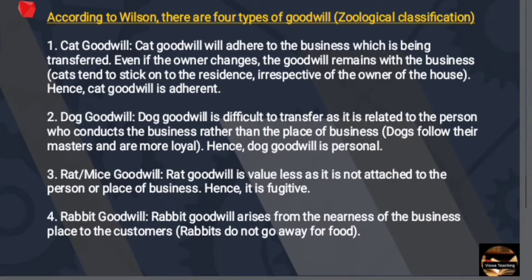Next, goodwill has a zoological classification. According to Wilson, there are four types of goodwill: Cat Goodwill, Dog Goodwill, Rat or Mice Goodwill, and Rabbit Goodwill.